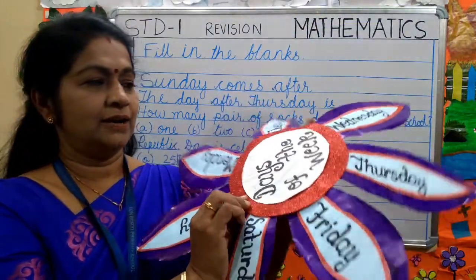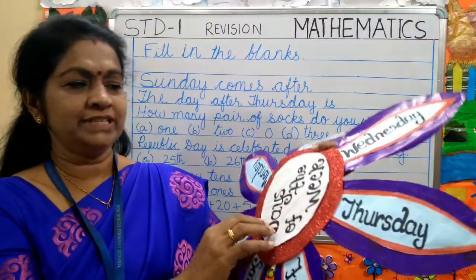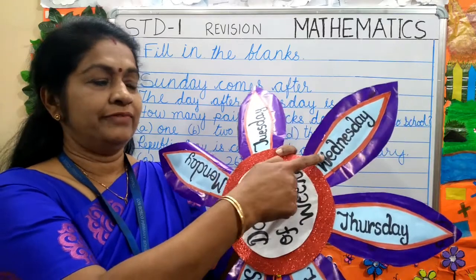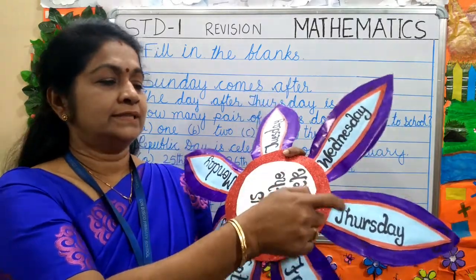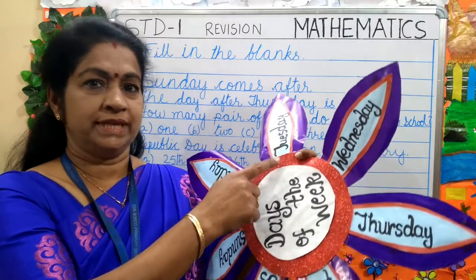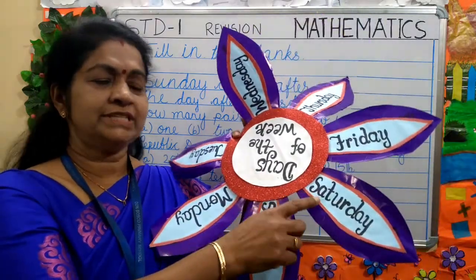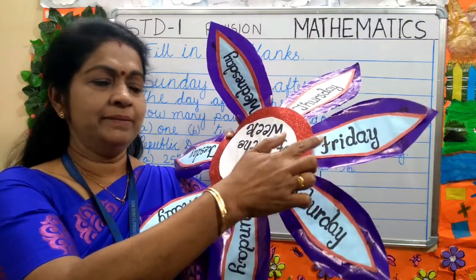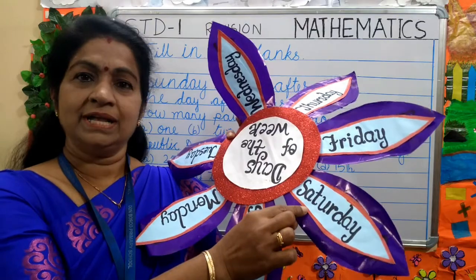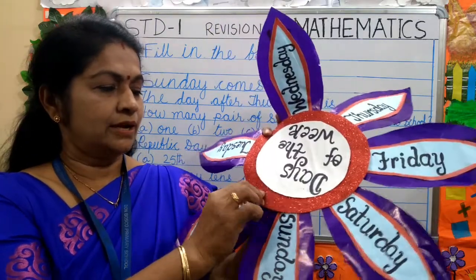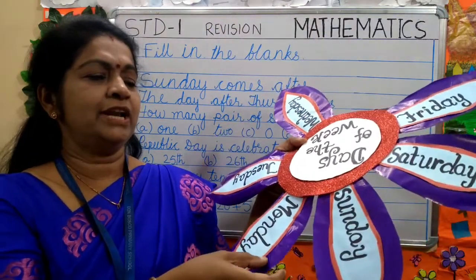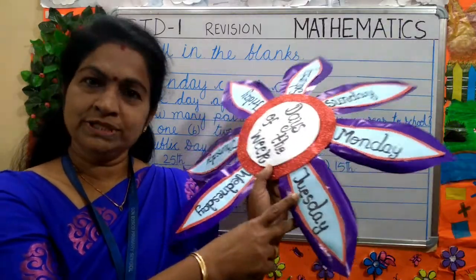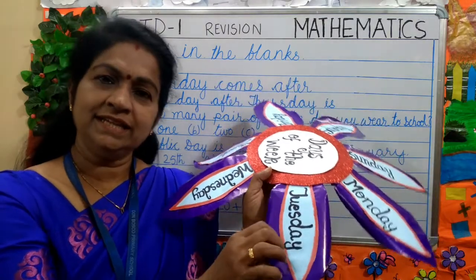Is that clear? Now children, tell me which day comes between Thursday and Tuesday. Wednesday will come between Thursday and Tuesday. Now, tell me which day comes before Saturday. Now tell me which day will come after Monday. After Monday, Tuesday will come.